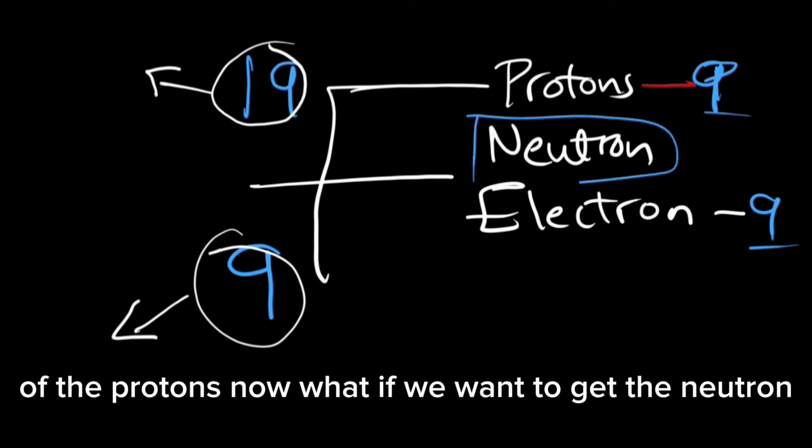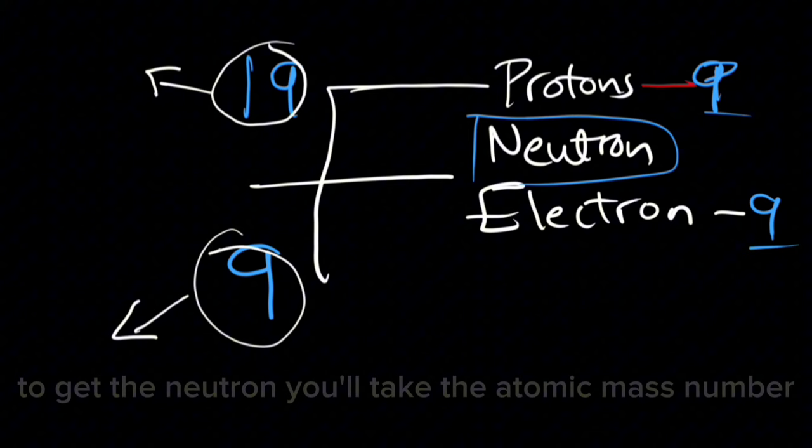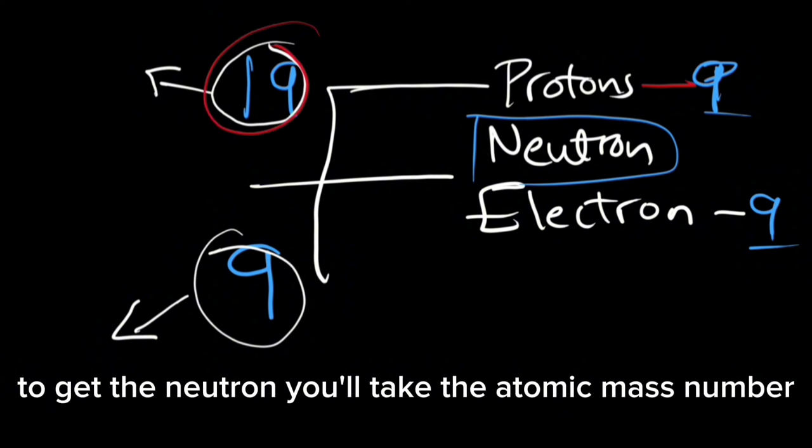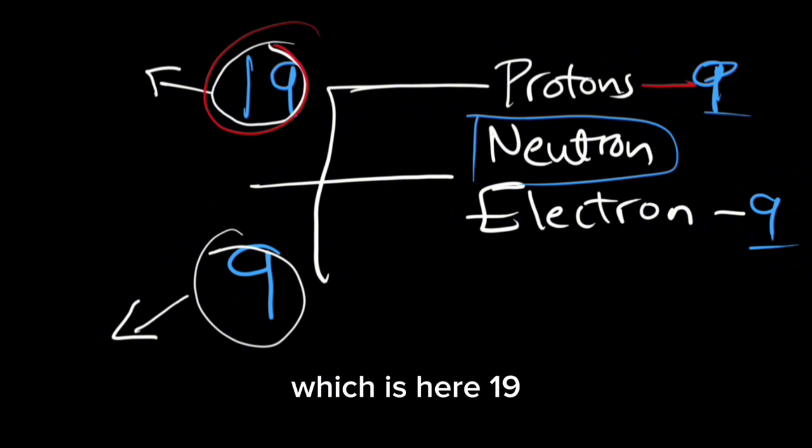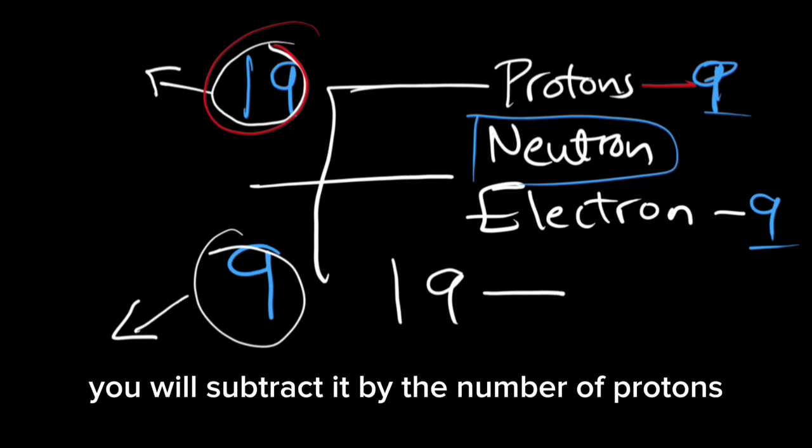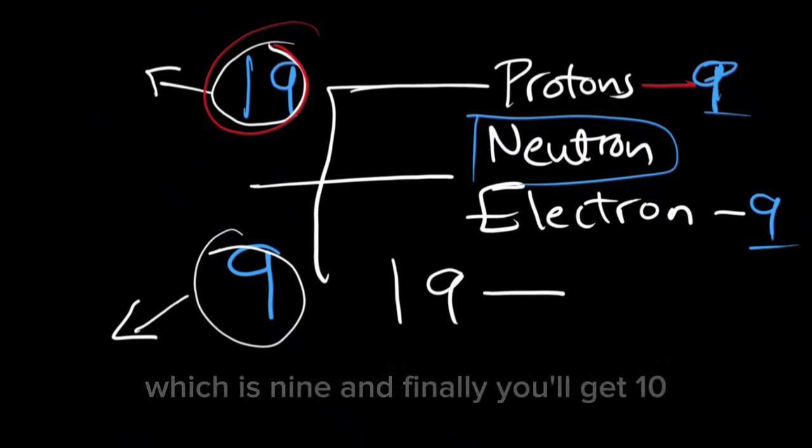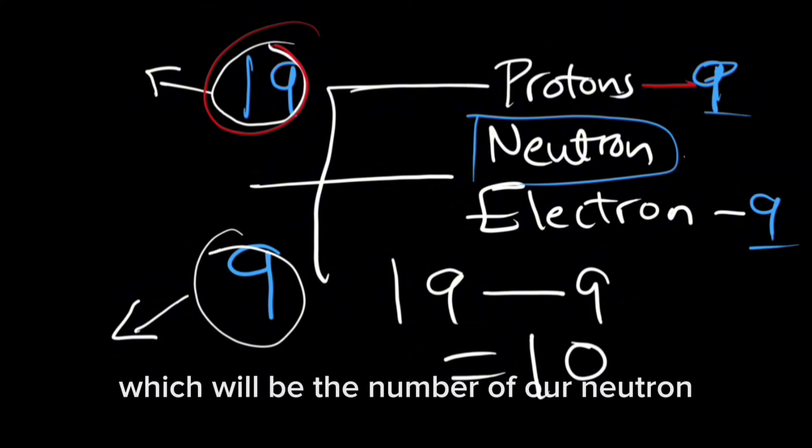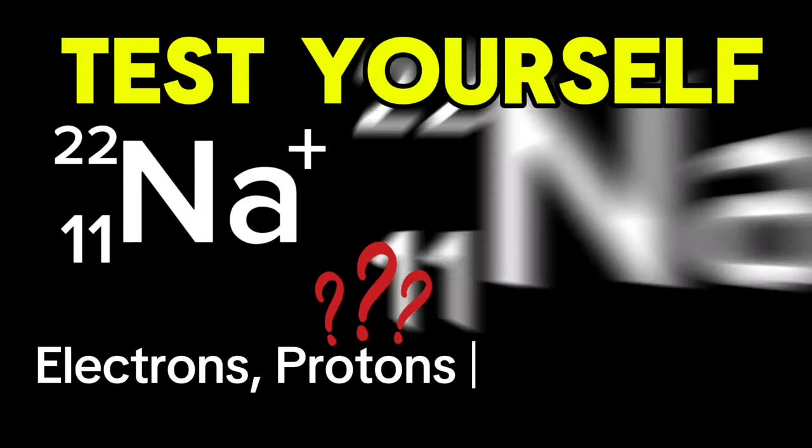Now, what if we want to get the neutron? To get the neutron, you will take the atomic mass number, which is 19. You will subtract it by the number of protons, which is 9. And finally, you will get 10, which will be the number of our neutrons.